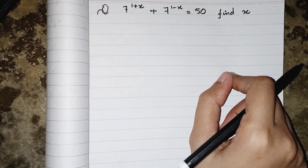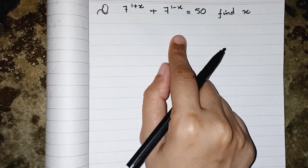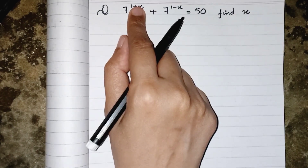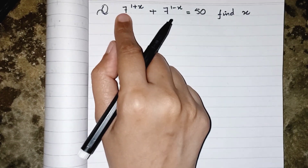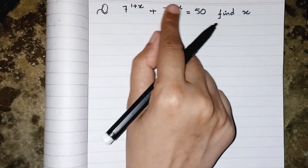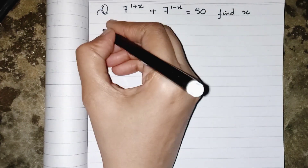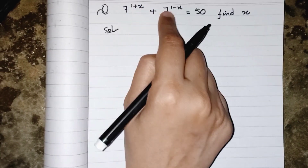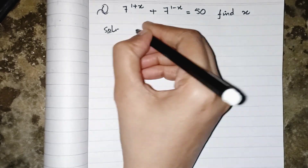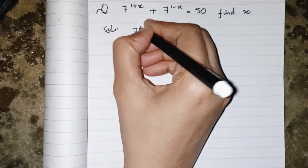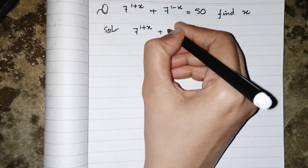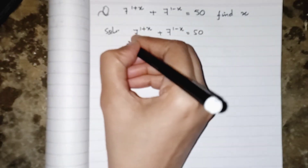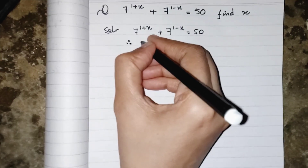In today's video we have to solve this exponential equation to find the value of x. In the exponent we have 7's exponent 1+x and 7's exponent 1-x. First of all we distribute 1+x and 1-x to the 7 according to the law of exponents: 7^(1+x) + 7^(1-x) equals 50.